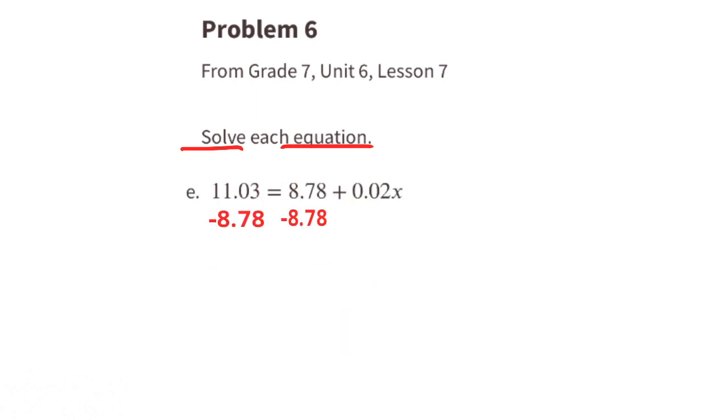E. Subtract 8.78 from both sides of the equal sign, and then divide both sides by 0.02. The value for X is 112.5.